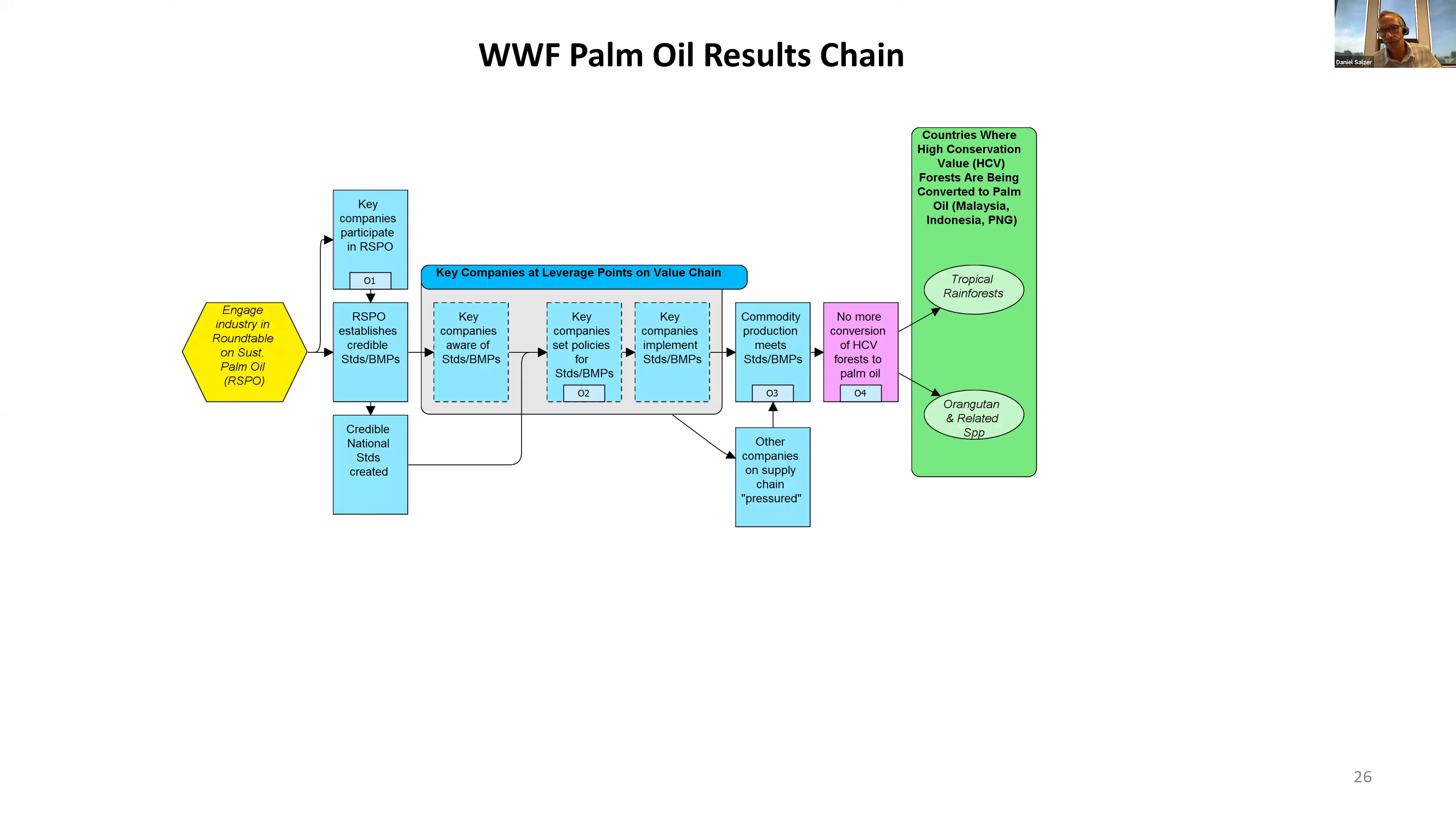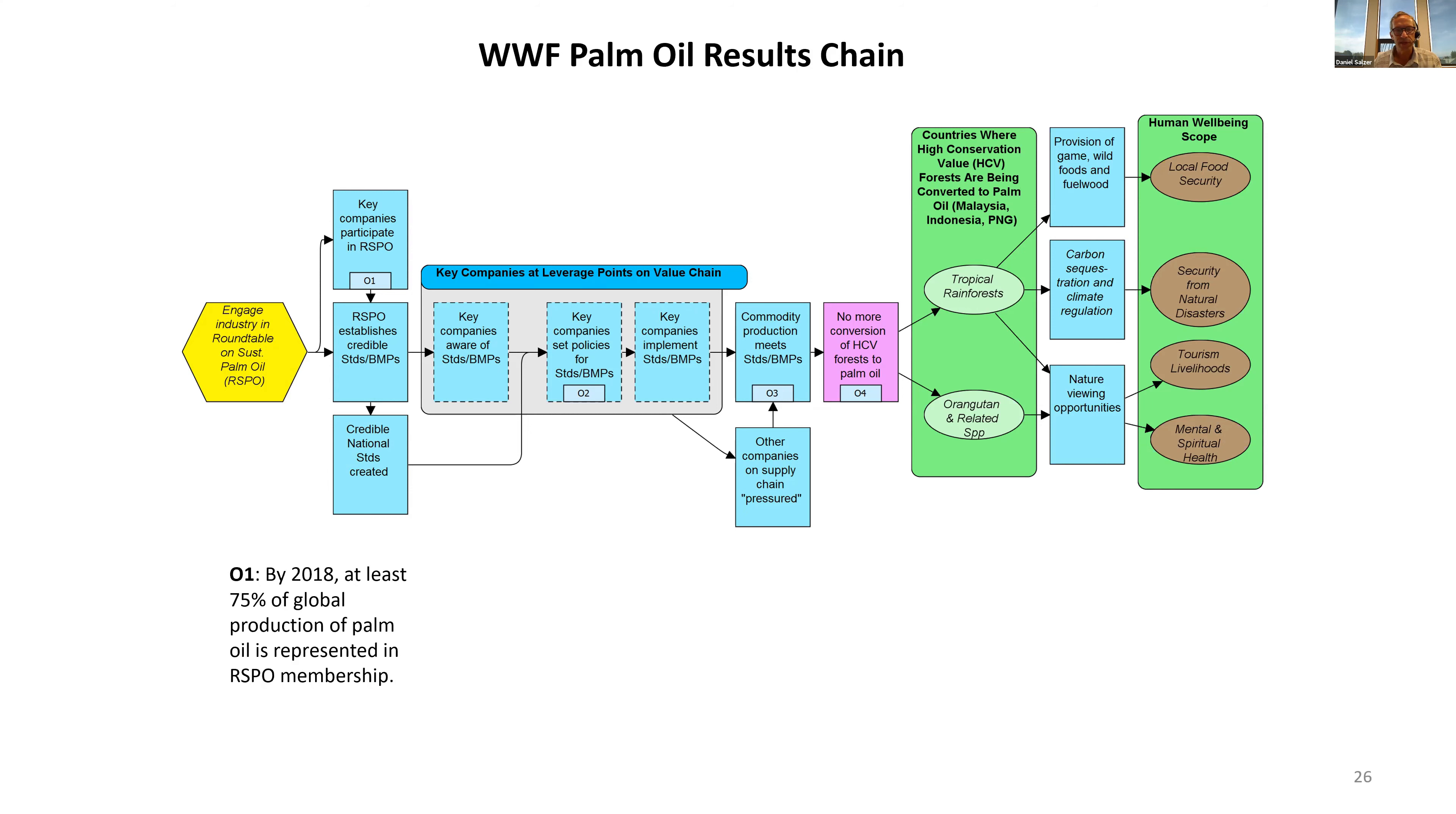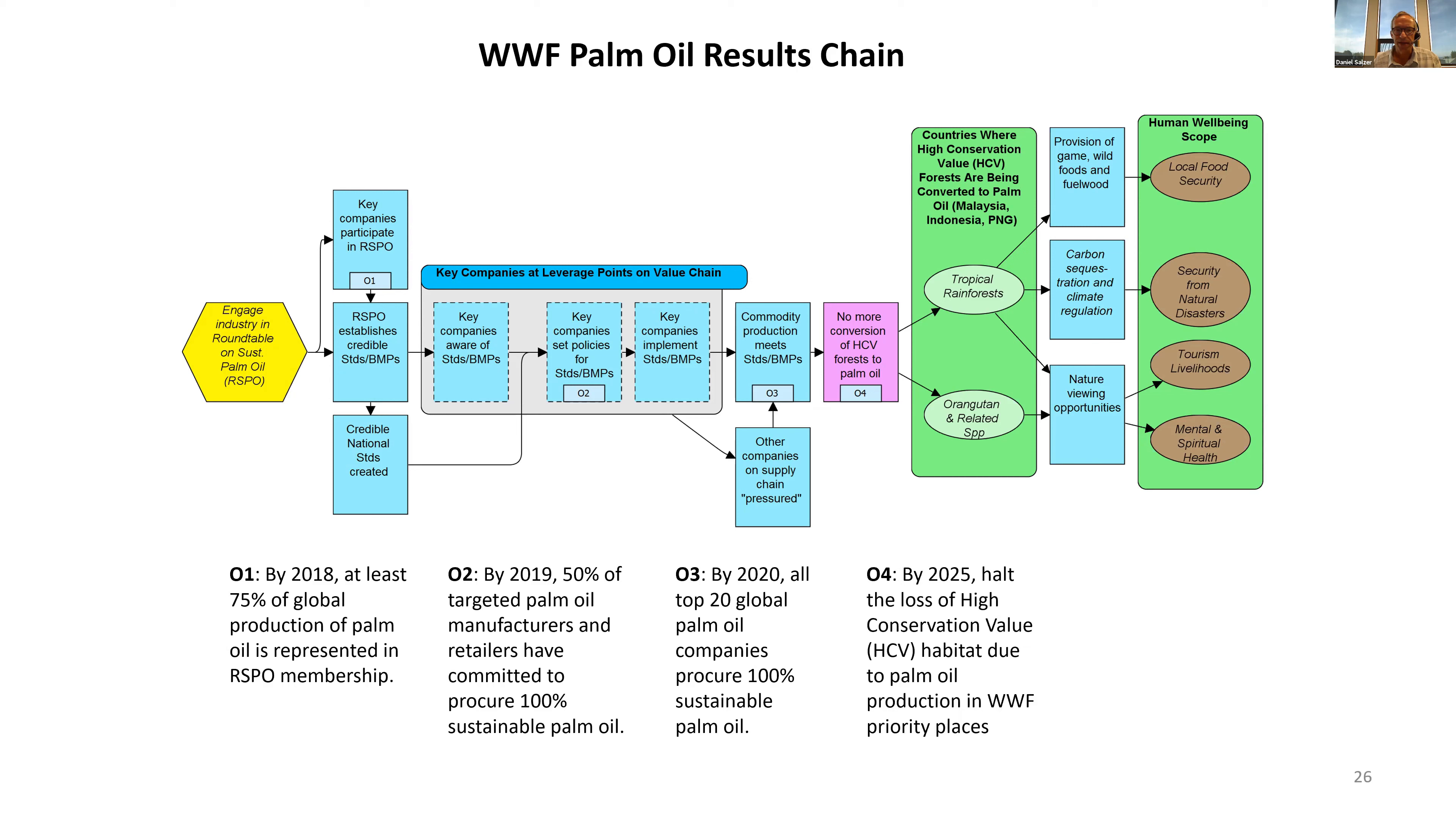The standards actually being met and then other companies on the supply chain being pressured to join. This ultimately leads to the halt of high conservation value forest conversion to palm oil. The results chain links to some other nature targets as well as human well-being targets. You can see the causal connections that tie all that together.